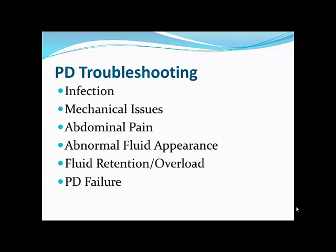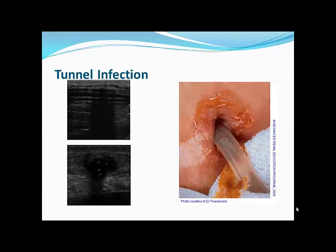Troubleshooting case: a patient comes in showing something dangling out of their catheter. This is a Tenckhoff catheter with erosion at the exit site — specifically, the external cuff of the catheter has extruded, most likely due to infection at the exit site. When you see this, consider whether there is a deeper infection. On closer examination, there is purulent drainage, tenderness over the exit site, and ultrasound shows a lucency — this patient has a tunnel infection with an abscess.